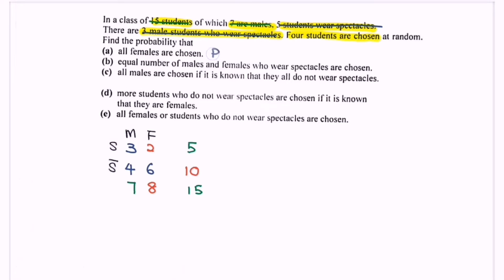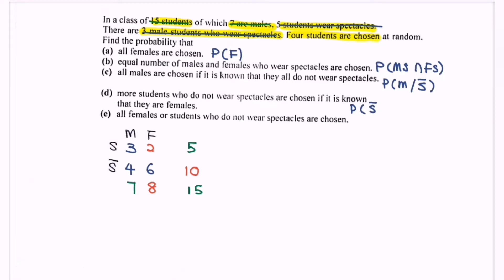Now referring to the questions: A - all females are chosen. B - equal numbers of male and female who wear specs are chosen. C - all males are chosen given that they do not wear spectacles. D - more students who do not wear specs are chosen given that they are all female. E - all female or students who do not wear specs are chosen.